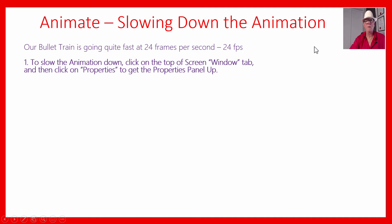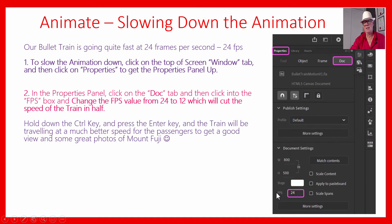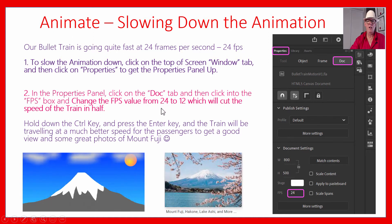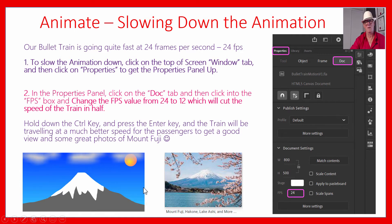Our bullet train goes pretty fast at 24 frames per second. To slow it down, click the Window tab and then Properties to get the properties panel up, or go Modify > Document. Find where it says FPS — frames per second — currently at 24. If we change it to 12, it'll only go half as fast. So change it to 12, and then when you do CTRL+Enter to generate your movie, it'll be going a bit slower — gives our passengers time to take a photo of the beautiful Mount Fuji.